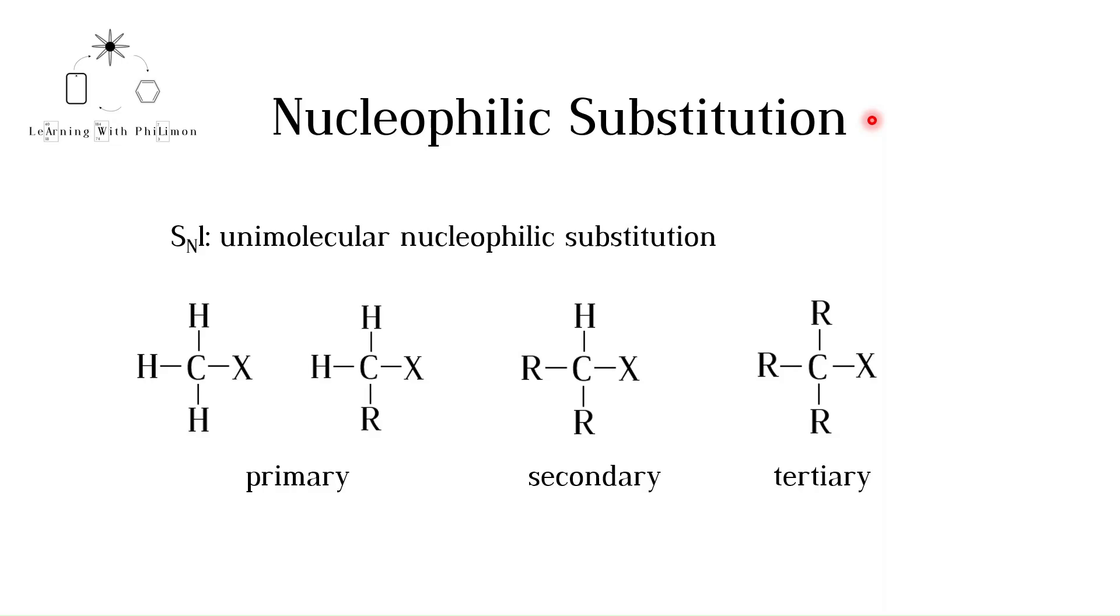In this video we will see that tertiary halogenoalkanes undergo a different mechanism, unimolecular nucleophilic substitution, abbreviated as SN1. In tertiary halogenoalkanes the carbon bonded to a halogen atom X is also bonded to 3 other carbon atoms.